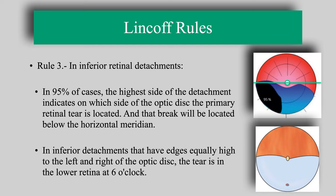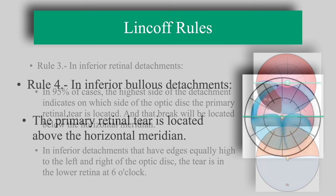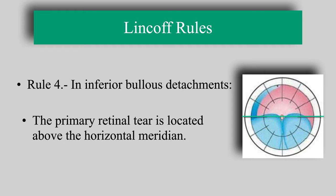Rule 3 applies to inferior retinal detachments, stating that in 95% of cases, the higher side of the detachment indicates which side of the optic disc contains the primary tear, located below the horizontal meridian. In inferior detachments with equally high edges on both sides, the tear is at 6 o'clock. Lincoff's fourth rule, for bullous inferior detachments, places the primary break above the horizontal meridian; in symmetric cases, it is usually a small hole near 12 o'clock.